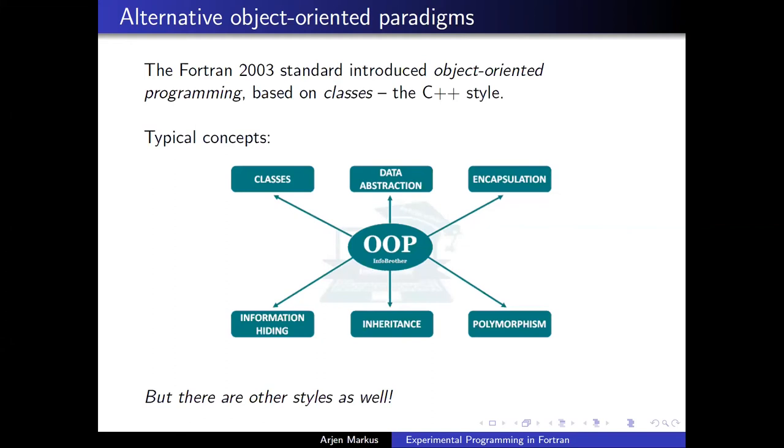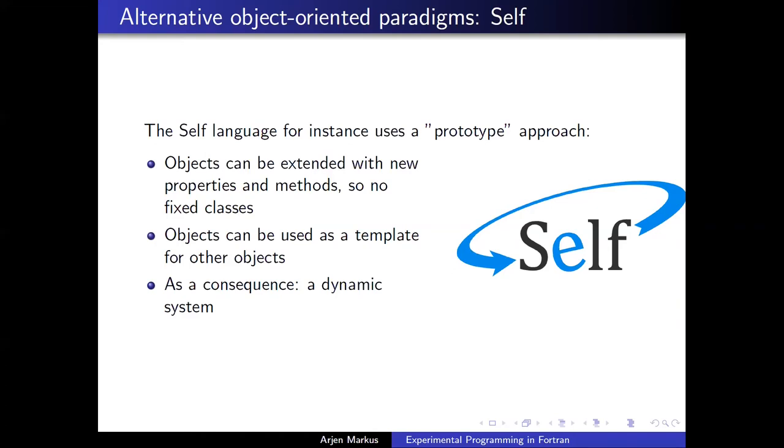I mentioned that C++ has been the paradigm for doing object-oriented programming. And if you look in the literature, you'll see this kind of concepts. Classes, data abstraction, encapsulation, information hiding, or implementation hiding. Inheritance, polymorphism. And it's so dominant that you would forget that there are other styles also. For instance, the self-language uses a prototype approach. Objects are not defined via classes, but by extending them with new properties and methods. And any object can then be used as a template for other objects. The consequence of that is a very dynamic system. You can build your objects on the fly.